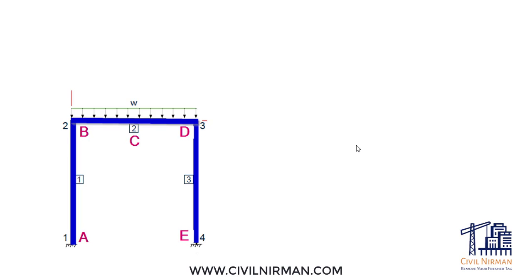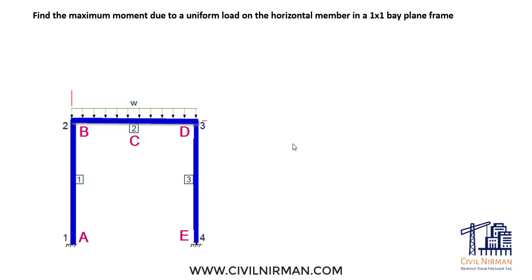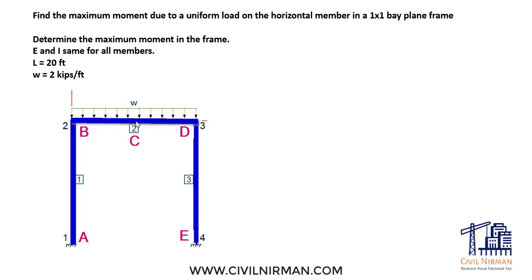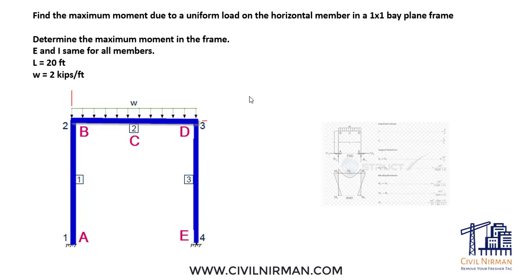Let's calculate this particular frame. I have a frame where we need to find the moment with a UDL. I have labeled the junctions A, B, C, D, E — these are the nodes in the STAAD model with member numbers one, two, and three. Later we will model this sample frame, apply the load, and validate the results. The load value is 2 kips per feet, the length is 20 feet, and E and I — modulus of elasticity and moment of inertia — are the same for all members.